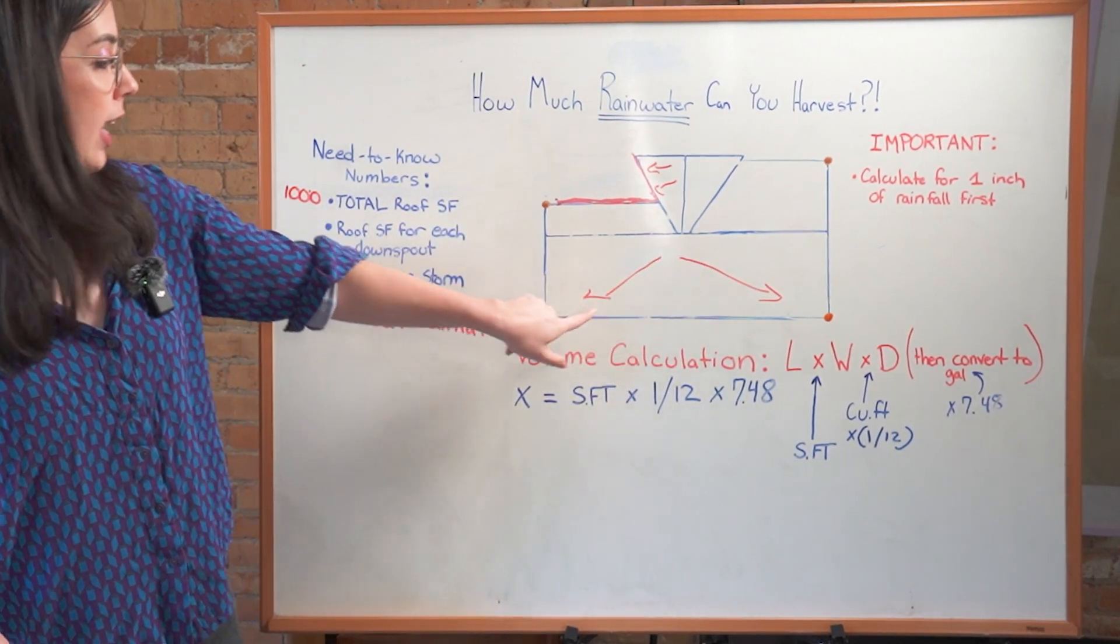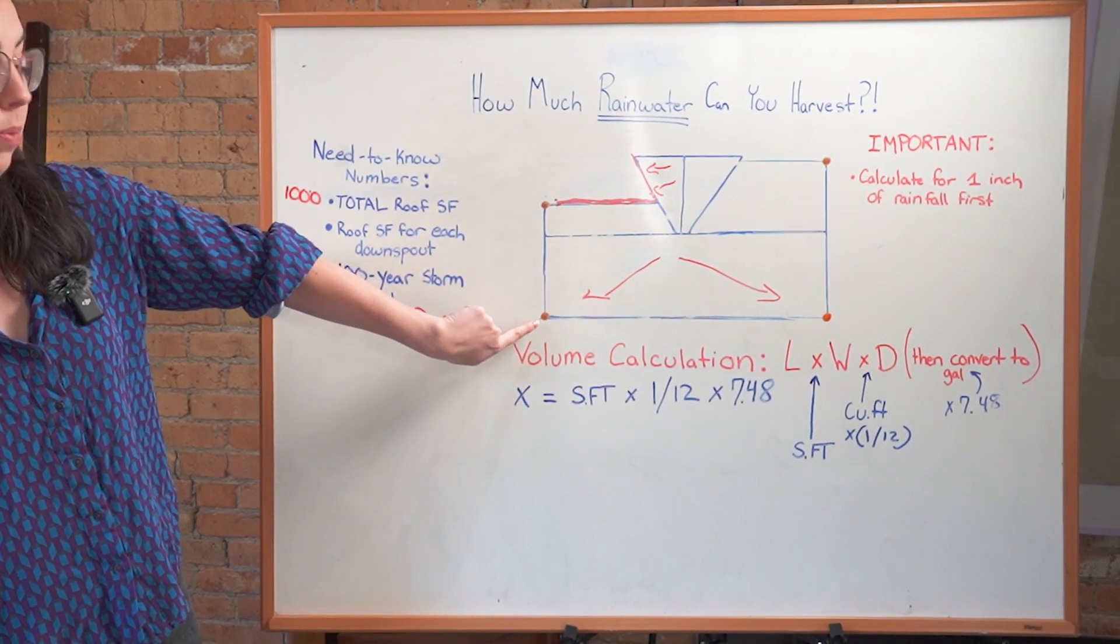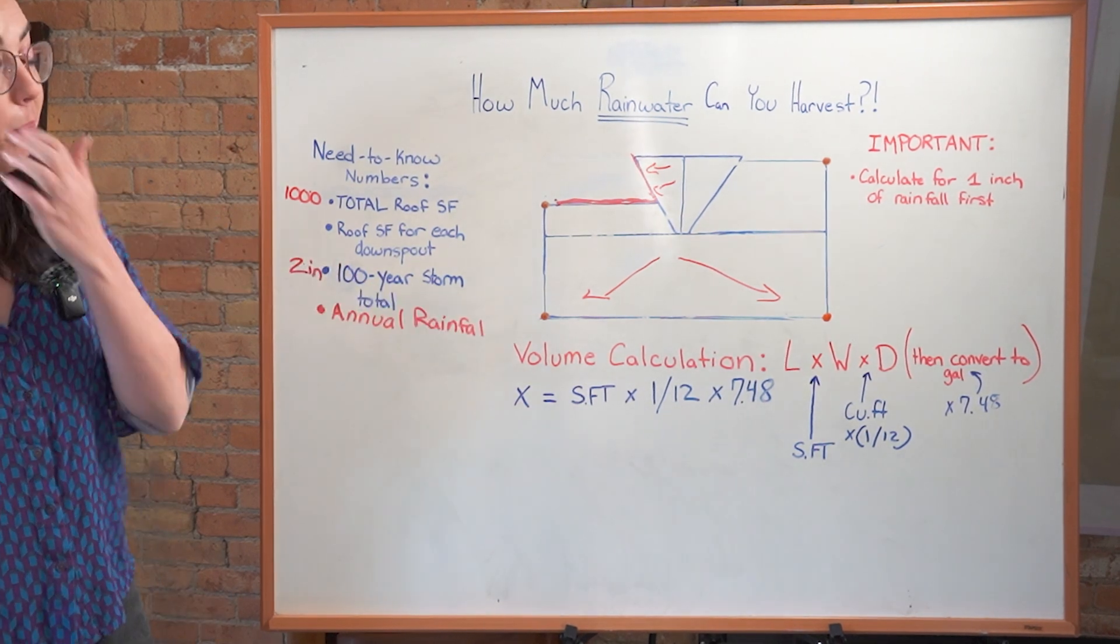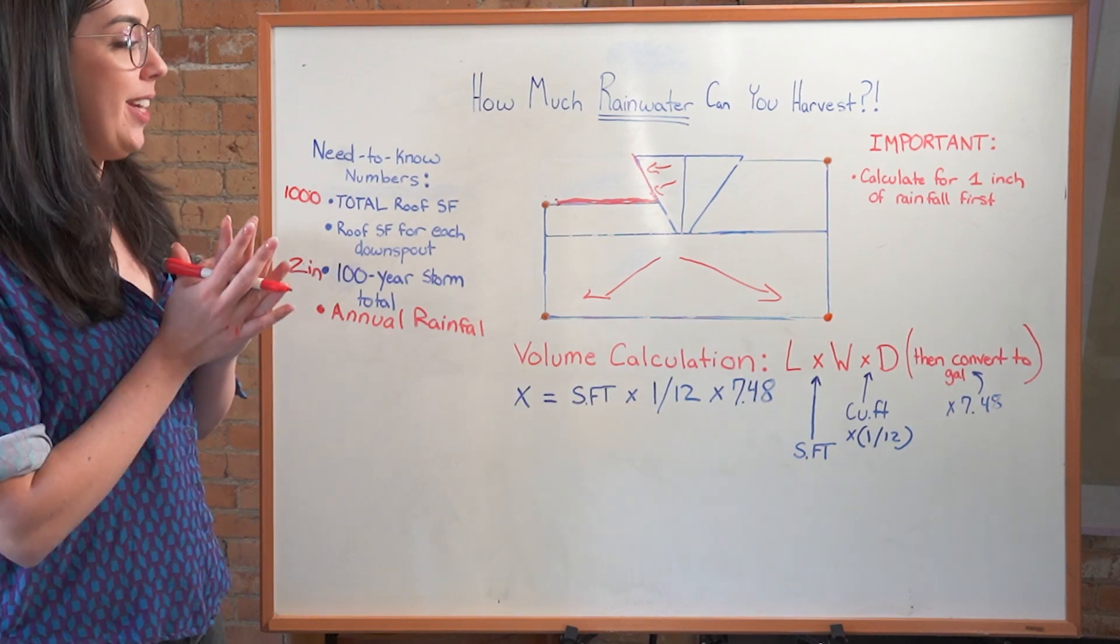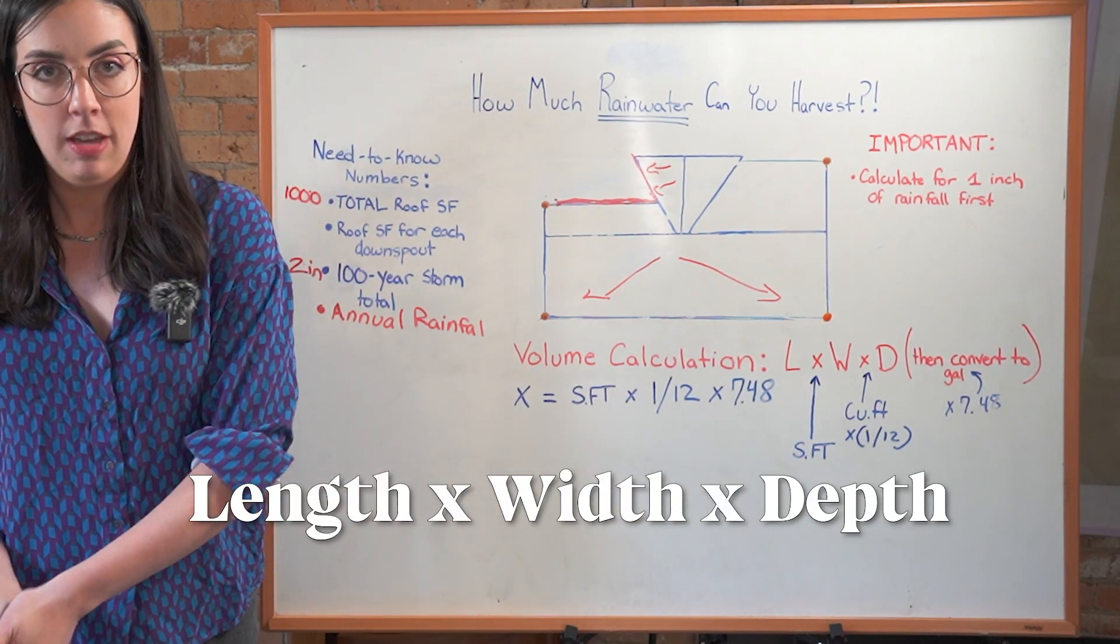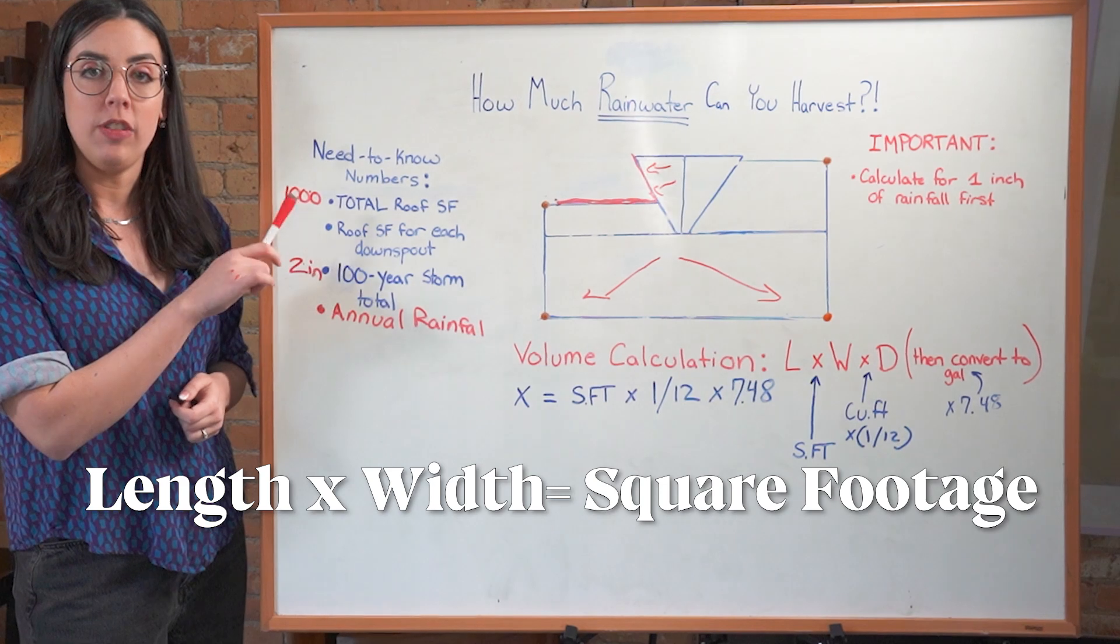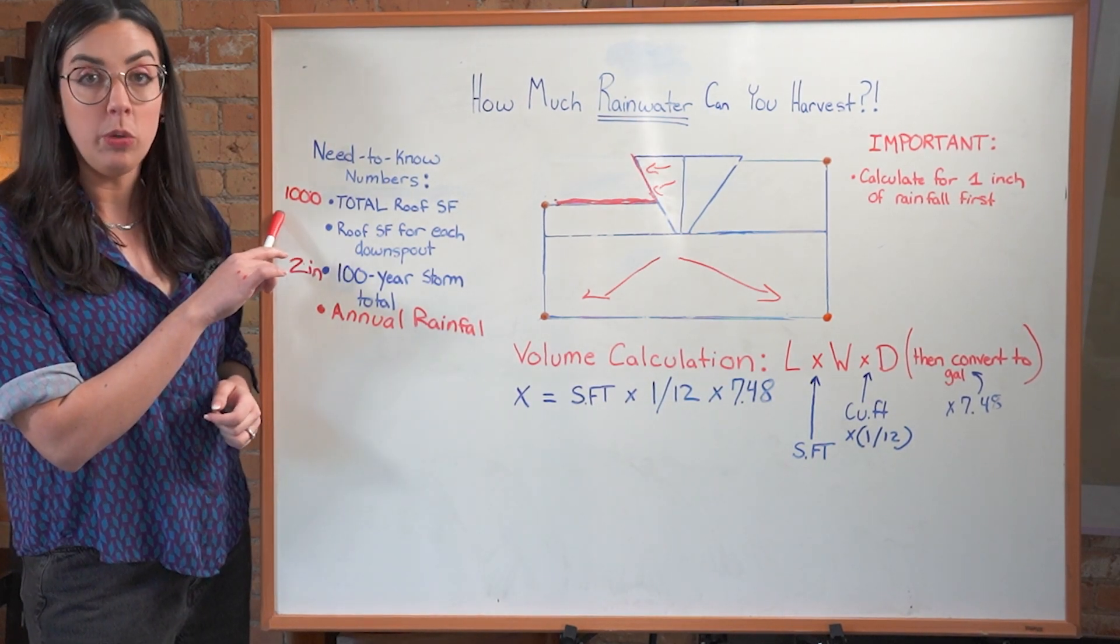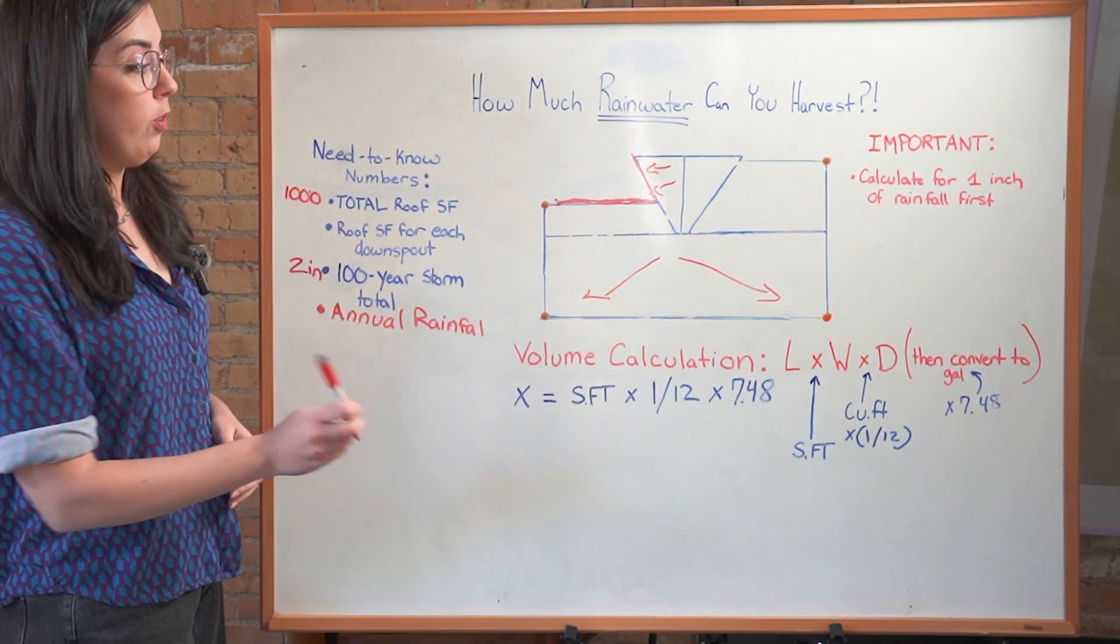So we are going to calculate the volume of water going to first the entire roof, just because that's fun to know. And then we're going to do 250 square feet, so we know how much water we should harvest from this downspout. That is a simple volume calculation. And that's why I'm really like, it's fine. Don't be stressed. Because it's length times width times depth. Length times width is going to be square footage. That's what square footage means. So as long as you know the square footage of these areas, we've already done most of the equation.